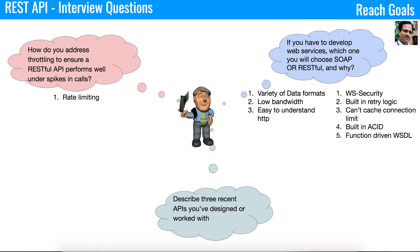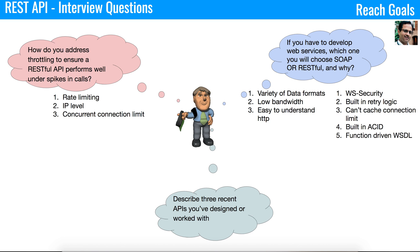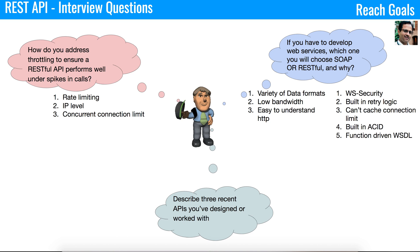The first type is rate limiting — it allows requests to pass through until a limit is reached within a certain time interval. The second is IP-level throttling — specific IPs are whitelisted and only those IPs are allowed to access the RESTful APIs. The third is concurrent connection limit — you can limit the number of concurrent connections for specific users, which protects your RESTful web services and helps avoid spikes.